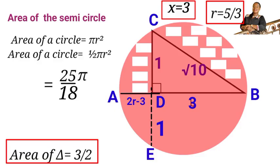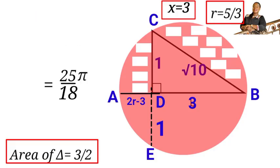So this is the area of this semicircle. Remember, we have to find the area of the shaded portion in the semicircle. So we found the area of the triangle first.